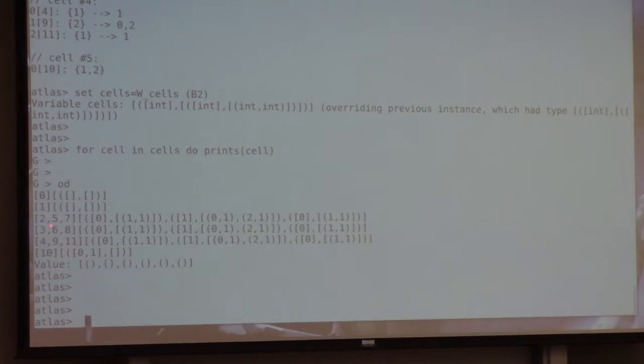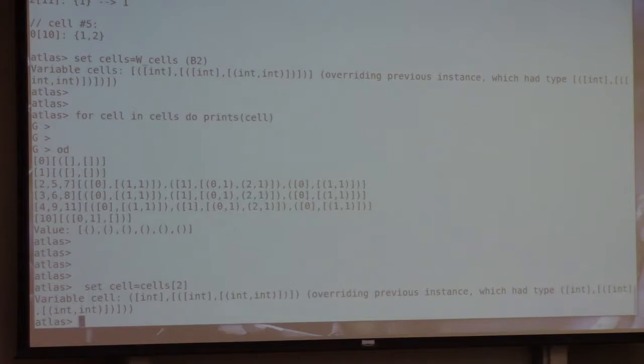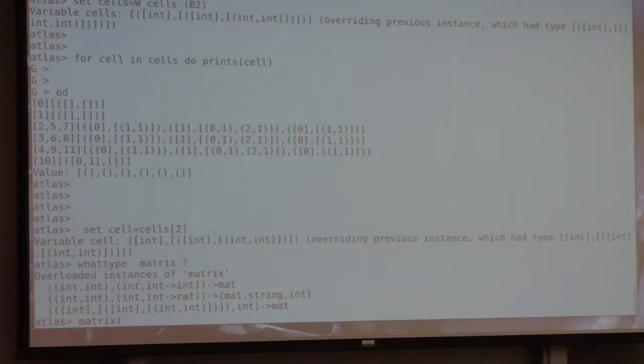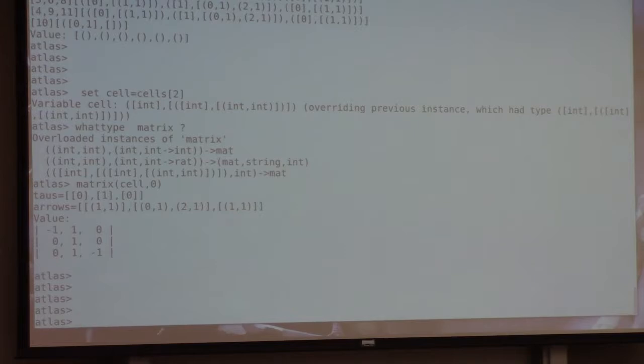So this row, 2.5.7, the first thing, that's the cell, and then all the rest of it is the other information about these arrows and tau invariants. I'm going to say set cell is equal to cells bracket 0, 1, 2. So now I have a cell, and I can look at the matrix of, what type matrix? matrix of cell 0. So that's, excuse me, this cell has three elements in it, and it outputs this information, the taus and arrows, and based on this, it computes this matrix.